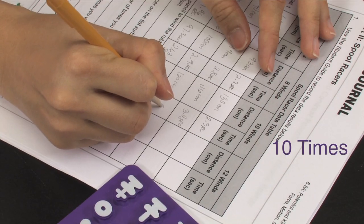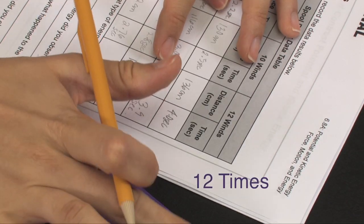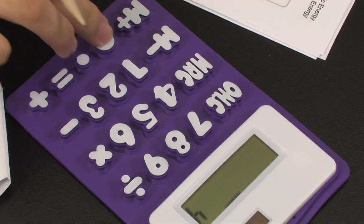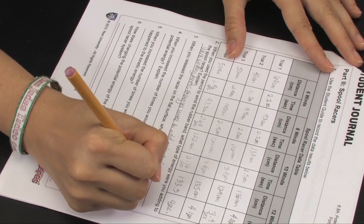They should repeat this process, winding the racer ten times, and then twelve times. Once finished, students will exchange data within their group, average the results, and answer the questions in the student journal.